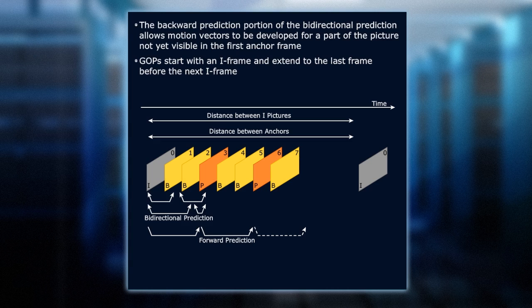The distance between I-pictures is the distance between the anchors. So you have an I-picture here, then a lot of predictive frames, then another I-picture. Whether we're using bi-directional prediction or forward prediction, that forward prediction is what's helping us determine what the other I-frame is going to be.